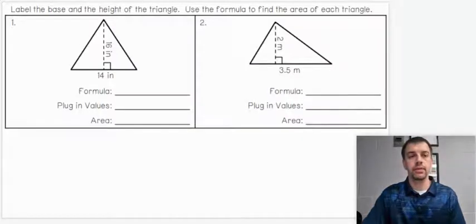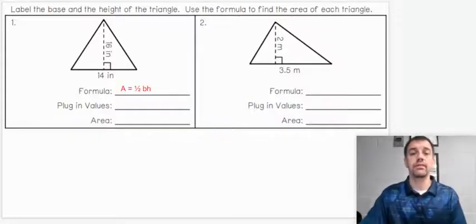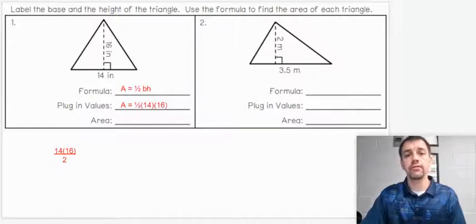Alright, let's get into a couple examples here. We have a triangle with a base of 14 inches and a height of 16 inches. Formula stays the same: area equals one-half base times height. All you need to do is plug in your values there.